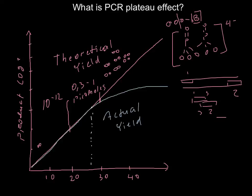Primer dimers come in two types. When primer one and primer two bind together, this is called a hetero primer dimer. Alternatively, a single primer of 20 to 30 nucleotides may be self-complementary and fold back on itself. Primers can also anneal to non-specific locations they were not designed to target.